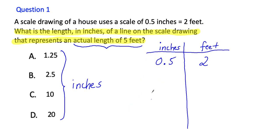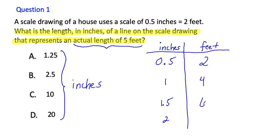What I'm going to do is count by 0.5s. So 0.5, then 1, then 1.5, and then 2. You can think of 0.5 as 50 cents and just count by 50 cents: 50 cents, $1, $1.50, $2. Over on the feet side I'm going to count by 2s, which is easier: 2, 4, 6, 8.